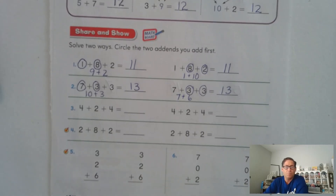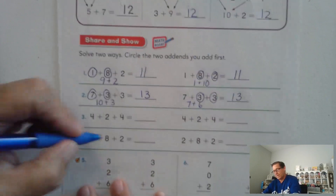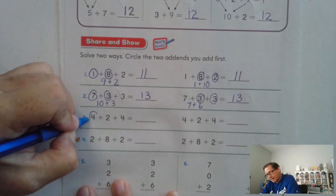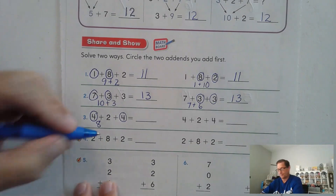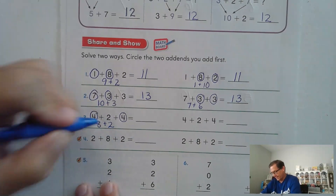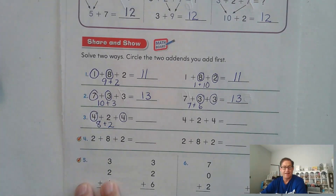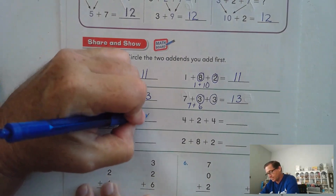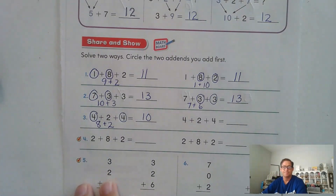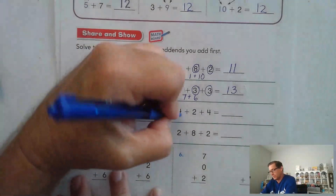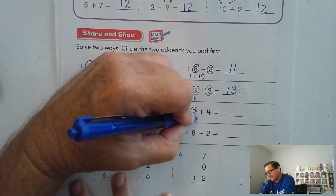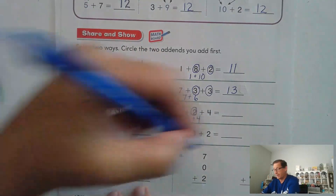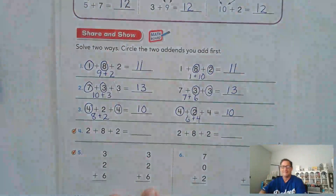Number three: four plus two plus four. Four plus four — maybe I know that four plus four is eight, because that's a doubles fact. And eight plus two is ten. We can also say four plus two is six, and six plus four also makes ten.